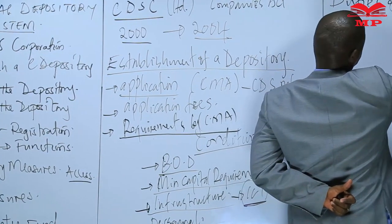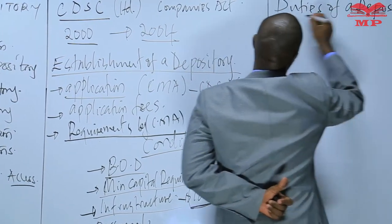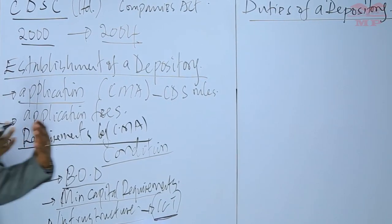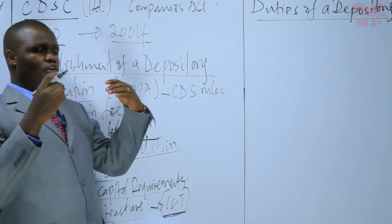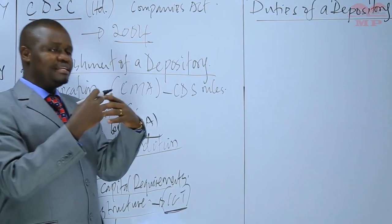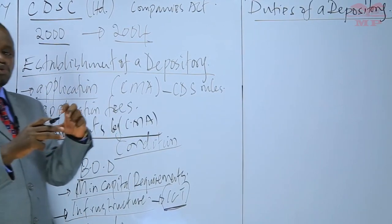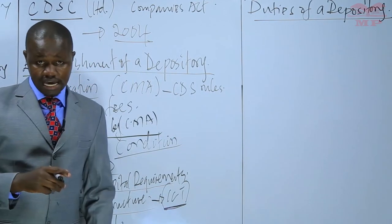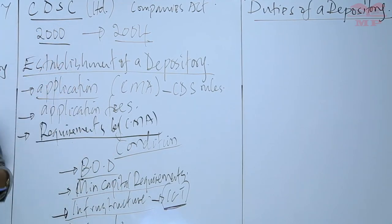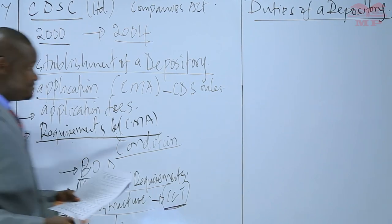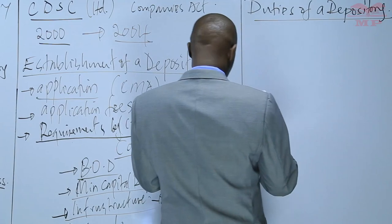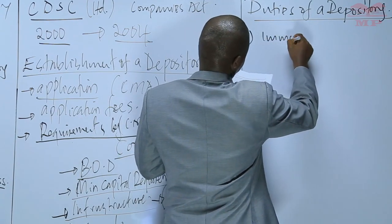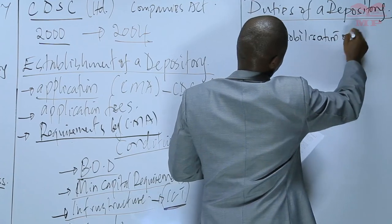The duties of a depository have everything to do with the mobilization of securities, matters to do with custody, dematerialization of securities, transactions in respect of these securities, and record keeping on transactions affecting the securities. Specifically, the duties include: immobilization of securities, facilitating deposits and withdrawal of certificates, and facilitating dematerialization.